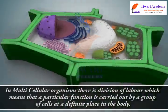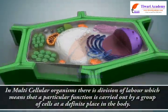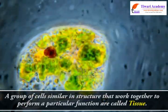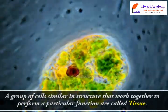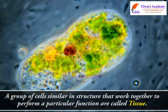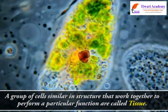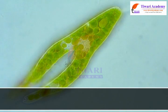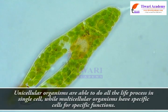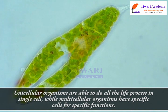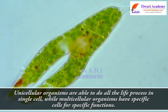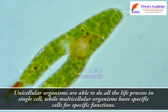There is division of labor, which means that a particular function is carried out by a group of cells at a definite place in the body. A group of cells similar in structure that work together to perform a particular function are called tissue. Unicellular organisms perform all life processes in a single cell, while multicellular organisms have specific cells for specific functions.